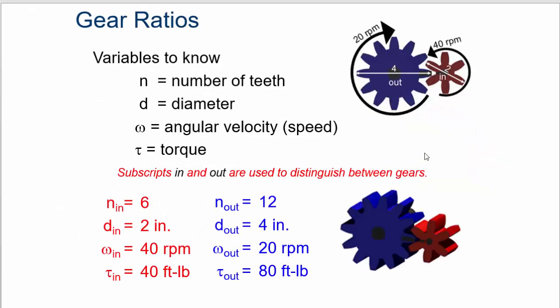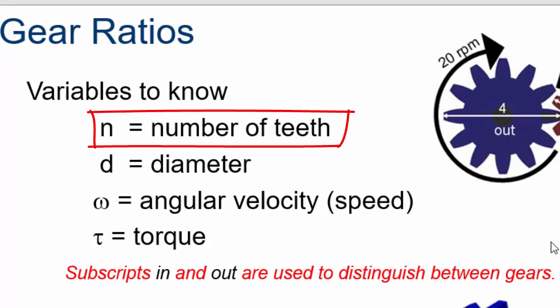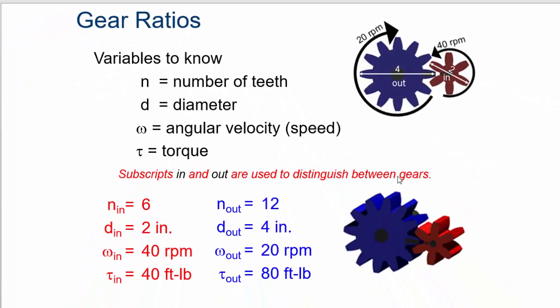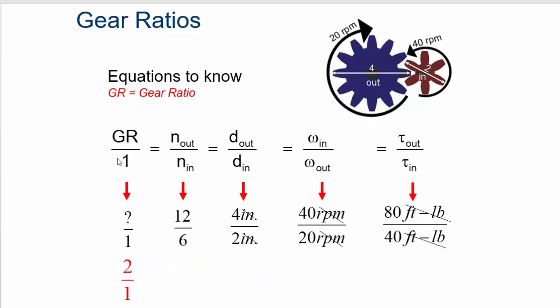Ratios are easy to figure out and you can do it in one of four ways. You can do it with the number of teeth, if you know the diameter of the gears, if you know the speed, the angular velocity of the gears, or if you know the amount of torque with the gears. So you can measure the ratio with any of this information. The equation that you need to know is that it's out of one, so it's gear ratio divided by one. So it's number of teeth out over number of teeth in, diameter out over diameter in, angular velocity in over angular velocity out, or torque out over torque in.